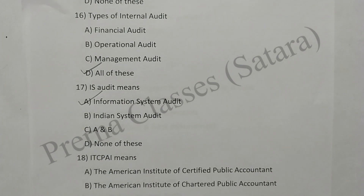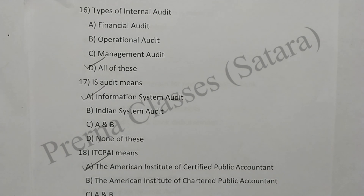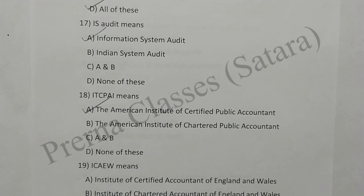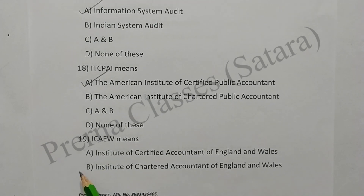Question 18: AICPA means American Institute of Certified Public Accountants. Option A is correct. Question 19: ICAEW means Institute of Chartered Accountants of England and Wales. Option B is correct.